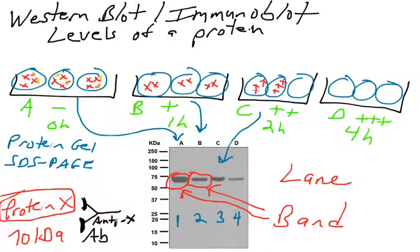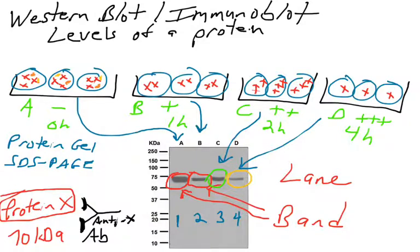Looking at all these different bands across the lanes: cells from sample C still show a decent amount of protein X detected, whereas sample D has a very thin band. That thin band corresponds to less antibody binding because there's less protein X in sample D. Comparing protein X across all four samples: sample A has the most protein X, and sample D has the least.